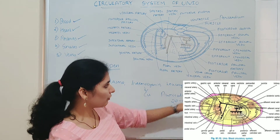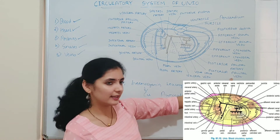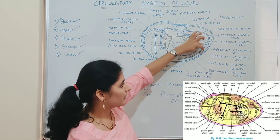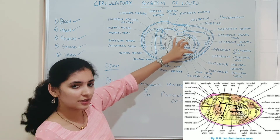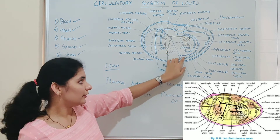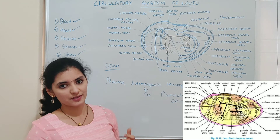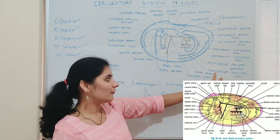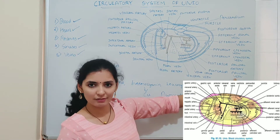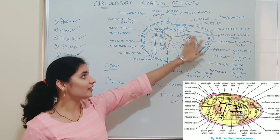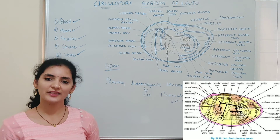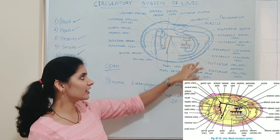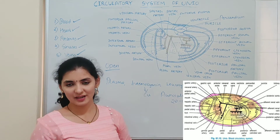There is also a posterior palleal vein present in the pallium. The posterior palleal artery supplies blood to the pallium region where oxygenation occurs, and this oxygenated blood is supplied back to the auricle via the posterior palleal vein. That covers the different veins which collect venous blood from different parts of the body and, after oxygenation, convey it to the auricle of the heart.